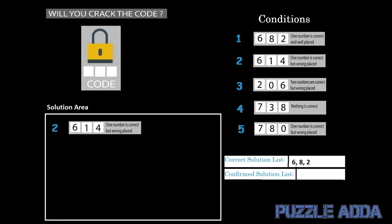Now the second condition says that out of 6, 1, and 4, one number is correct but wrongly placed. According to this condition we will add 1 and 4 to the correct solution list. 6 is already there so no need to add it again. Now we have 6, 8, 2, 1, and 4 in the correct solution list, and our confirmed solution list is still empty.